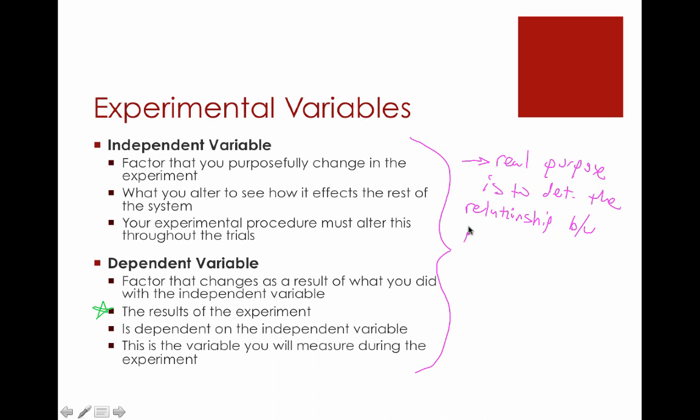First, the real purpose of our experiment is to determine the relationship between our independent and our dependent variables. That's really what you're trying to accomplish. Your hypothesis is going to identify what you think that relationship is, and then the experiment itself is going to confirm whether that relationship does or does not exist.